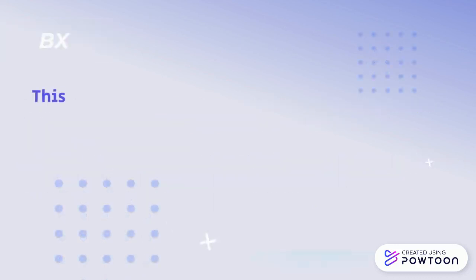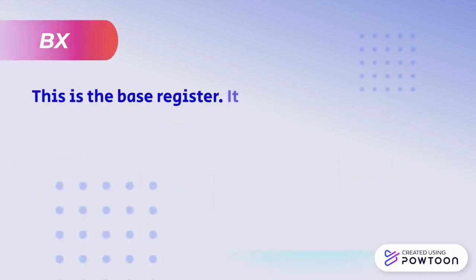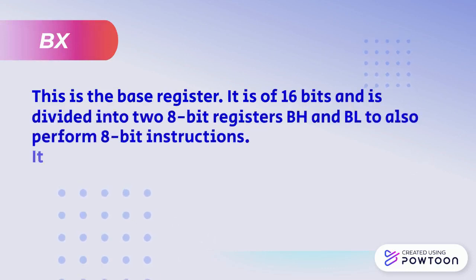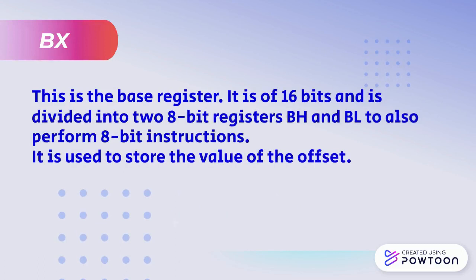The second data group register is BX. BX is the base register. It consists of 16 bits and it is divided into two 8-bit registers to hold the value of the offset.